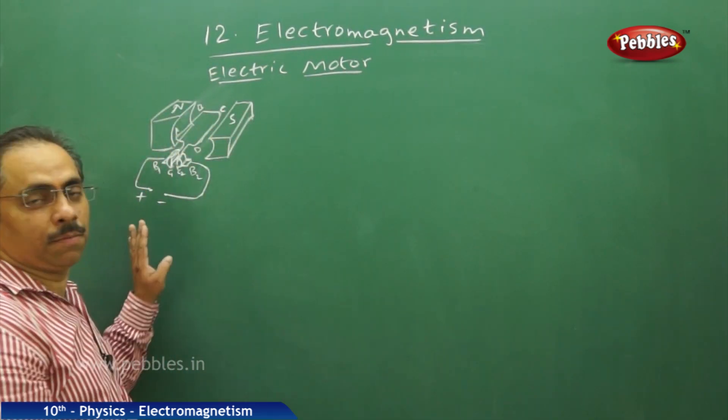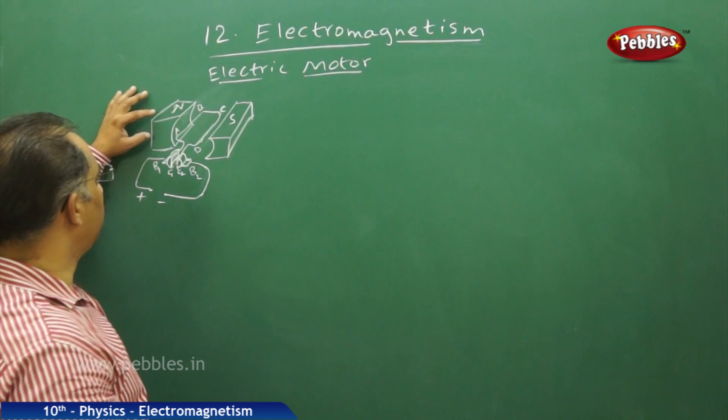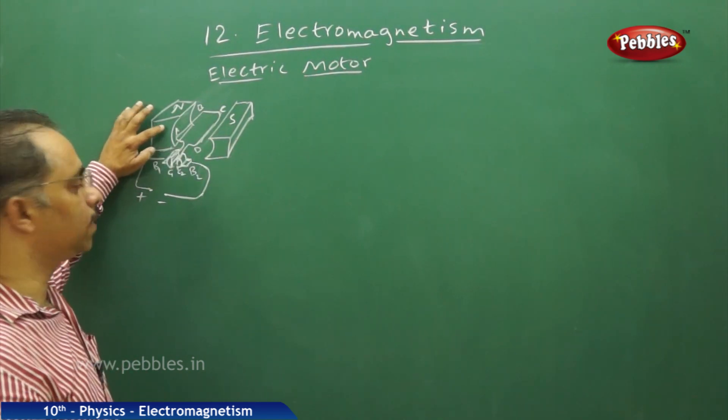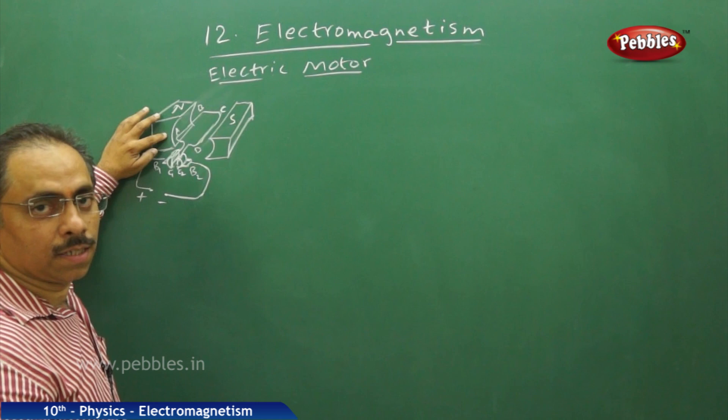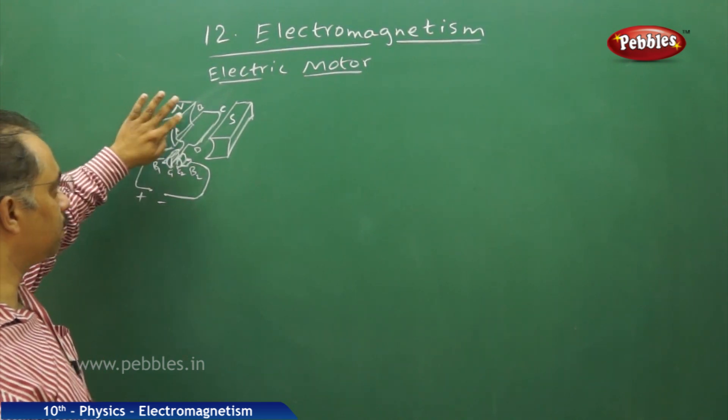This is the rough diagram of an electric motor, N and S. You can see these are two circular poles. The surface is made circular.